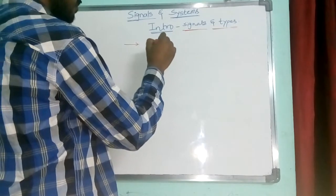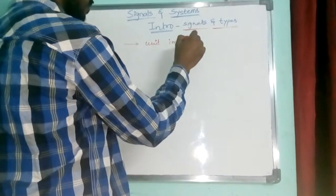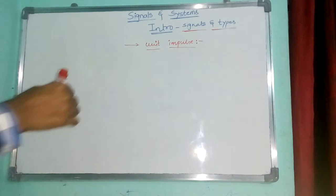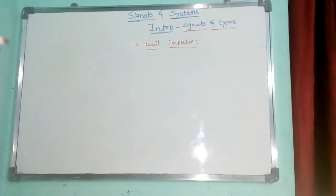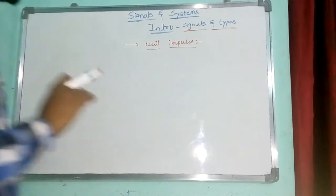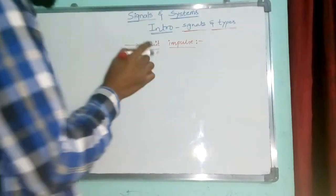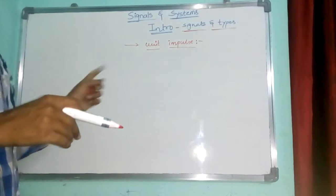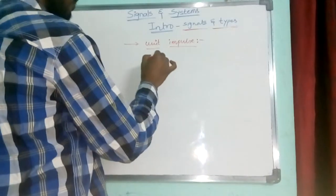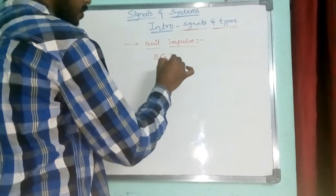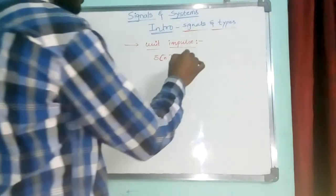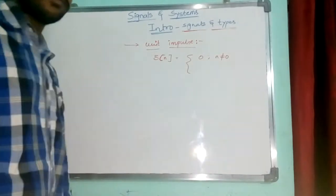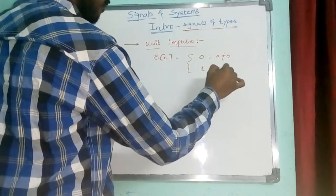The first signal is the unit impulse signal. This unit impulse is only defined at one point. I will consider two cases: discrete time and continuous time. For the discrete case, δ(n) = 0 for n ≠ 0, and δ(n) = 1 for n = 0.